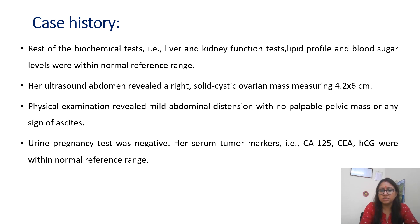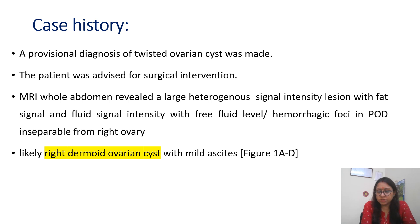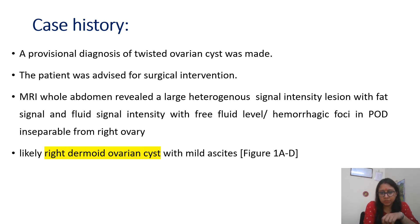Serum tumor markers, including CA-125 and β-HCG, were all within the normal reference range. Based on the clinical history and radiological findings, a diagnosis of twisted ovarian cyst was made and the patient was advised for surgical intervention.